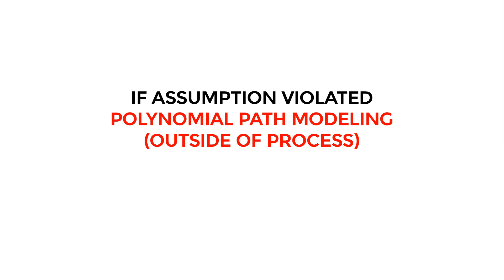What to do if the linearity assumption is violated? You could use polynomial path modeling — that is, you would include in addition to the independent variable the squared value of the independent variable. But since you can't do this within Process, I would use path modeling with lavaan or Amos.